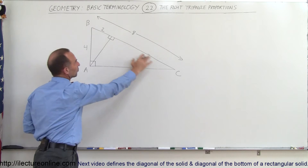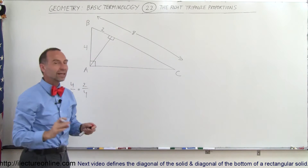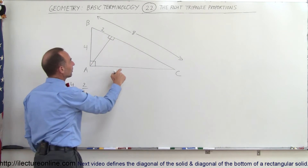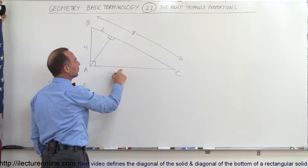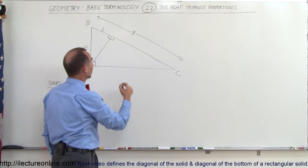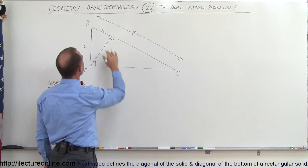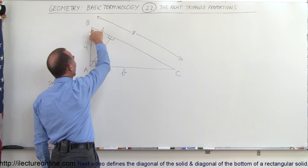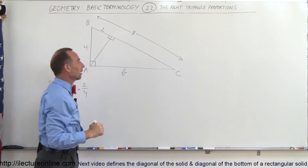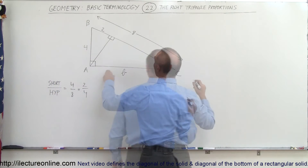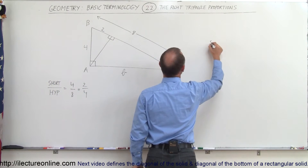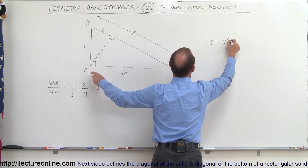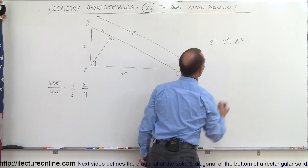What about the third triangle, this triangle right here? That takes a little bit more work. Let's find out what the length of this side is right here. Notice, using the Pythagorean Theorem, let's call this side equal to side B. That's directly opposite to angle B right there. And we know from the Pythagorean Theorem that 8 squared is equal to 4 squared plus B squared.